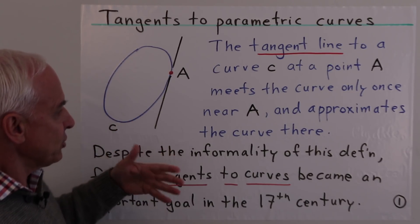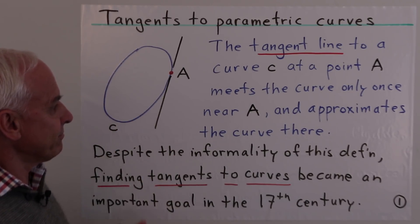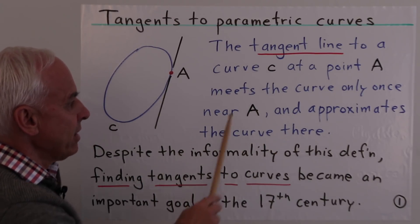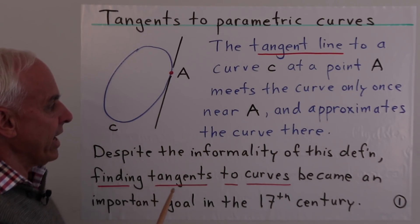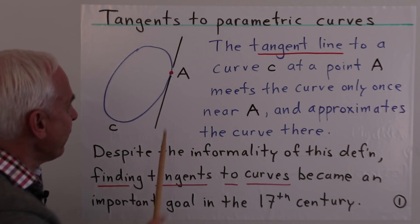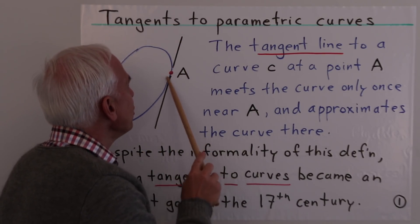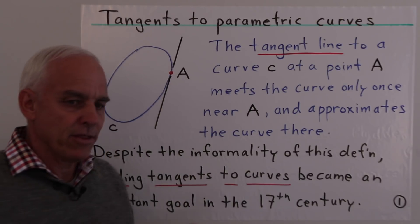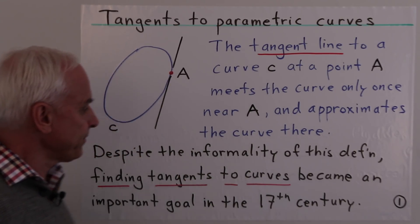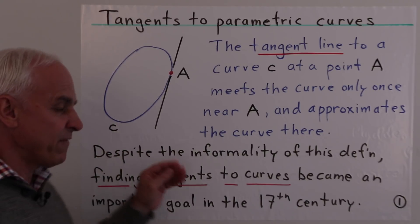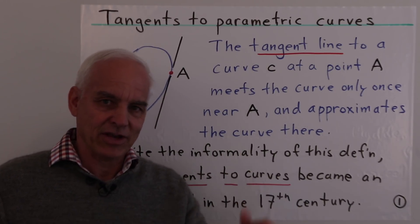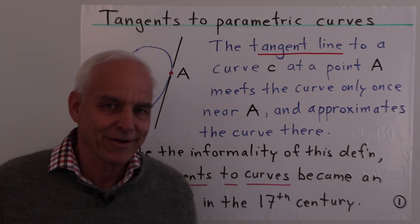That's a kind of geometrical definition. The tangent line to a curve at a point meets the curve only once near A and approximates the curve there. So if we magnified the region around there, then the curve and the tangent line would look pretty close. This is rather an informal definition, so we should take this as an initial orientation.